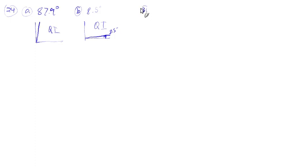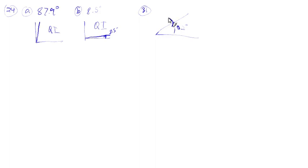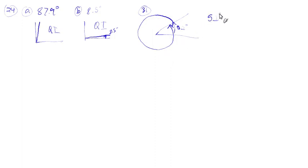Let's look at number 31. They give us an angle of 52 degrees and want us to find one positive and one negative coterminal angle. The terminal side is at 52°. If we go all the way around the circle — a full 360° — we stop at the same terminal side. So we take 52 and add 360, giving us 412 degrees.